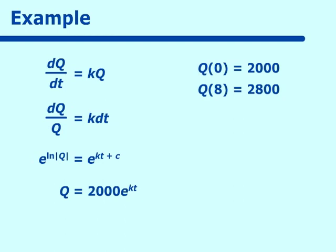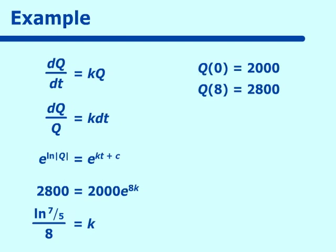Now we use our other condition q of 8 is equal to 2,800 to solve for k. So we have 2,800 is equal to 2,000 e to the 8k. Reducing, we get 7 fifths equals e to the 8k. Taking the natural log of both sides, we get ln of 7 fifths equals 8k, or k is equal to ln of 7 fifths all over 8. So our final equation becomes q is equal to 2,000 e to the power of ln of 7 fifths over 8, times t. This is our final model for this problem.